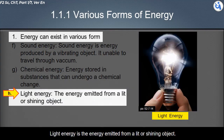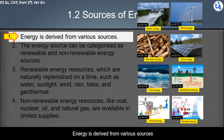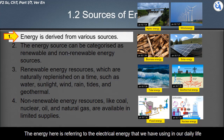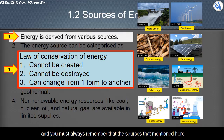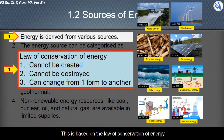Light energy is the energy emitted from a lit or shining object. Now let's look at the sources of energy used in our daily life. Energy is derived from various sources, and here it refers to electrical energy. Remember that these sources are not about creating energy, but about converting energy from another form into electrical form — this is based on the law of conservation of energy.